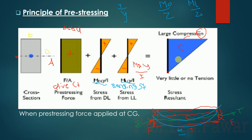There is no tension in the full section, and if there is no tension, there is no need for reinforcement. In an RCC member, the role of concrete below the neutral axis is ignored because that part is in tension and the contribution of that concrete is neglected — it has no structural role.